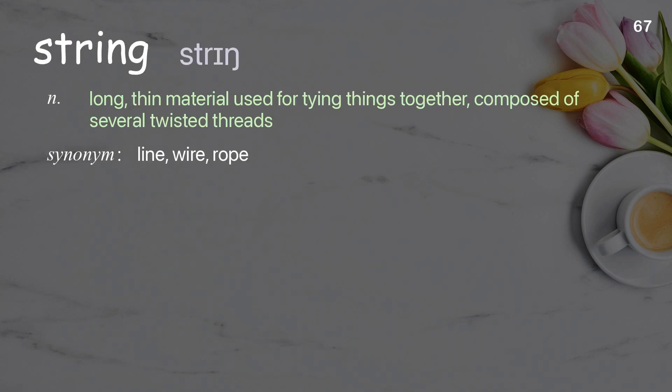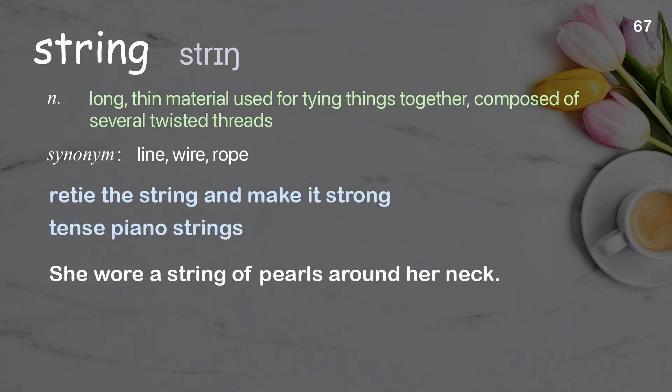String: long, thin material used for tying things together, composed of several twisted threads. Examples: re-tie the string and make it strong, tense piano strings. She wore a string of pearls around her neck.